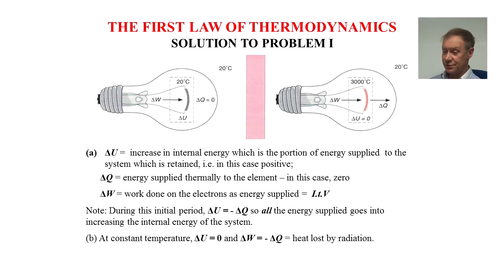During the initial period, delta U equals minus delta Q, so all the energy supplied goes into increasing the internal energy of the system. In the second part, when it's running at constant temperature, delta U is zero, and then delta W equals minus delta Q, which is heat lost by radiation.